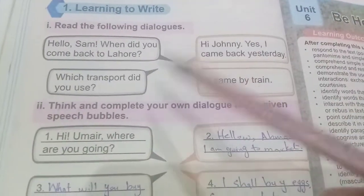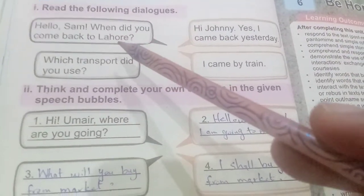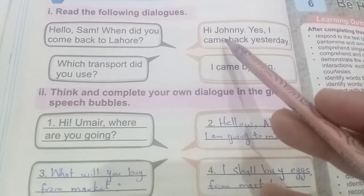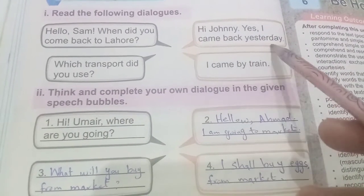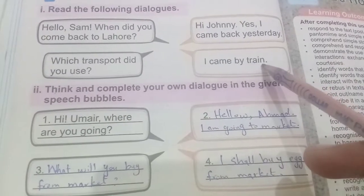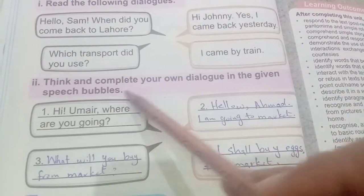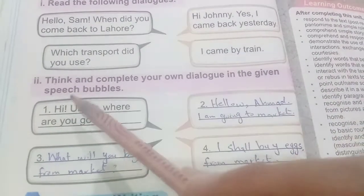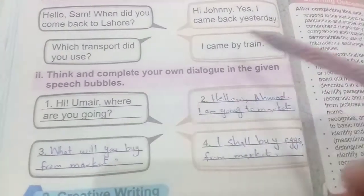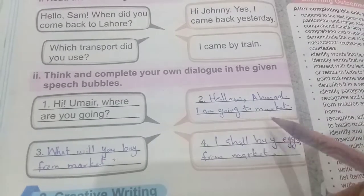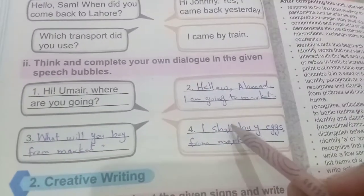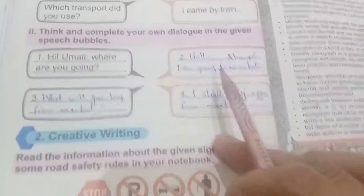Read the following dialogue. Hello Sam, when did you come back to Lahore? Hi Johnny, yes I came back yesterday. Which transport did you use? I came by train. Think and complete your own dialogue: Hi Umair, where are you going? Hello Ahmed, I am going to the market. What will you buy from the market? I shall buy eggs from the market.